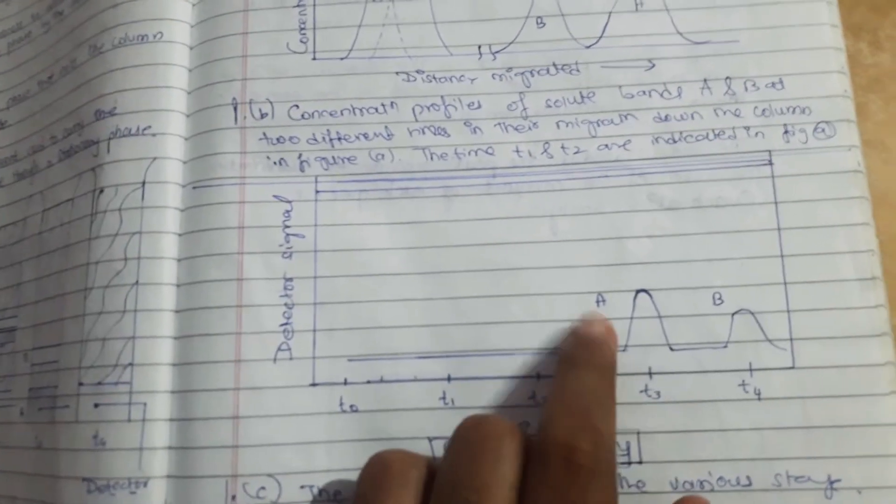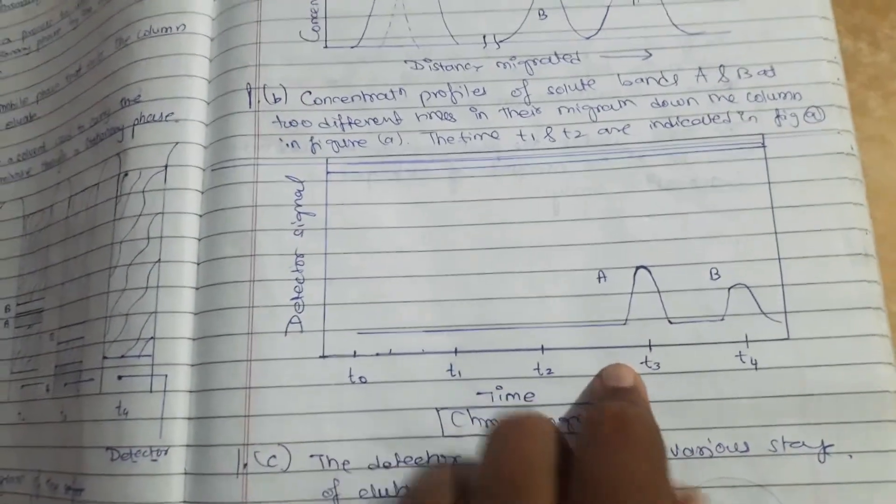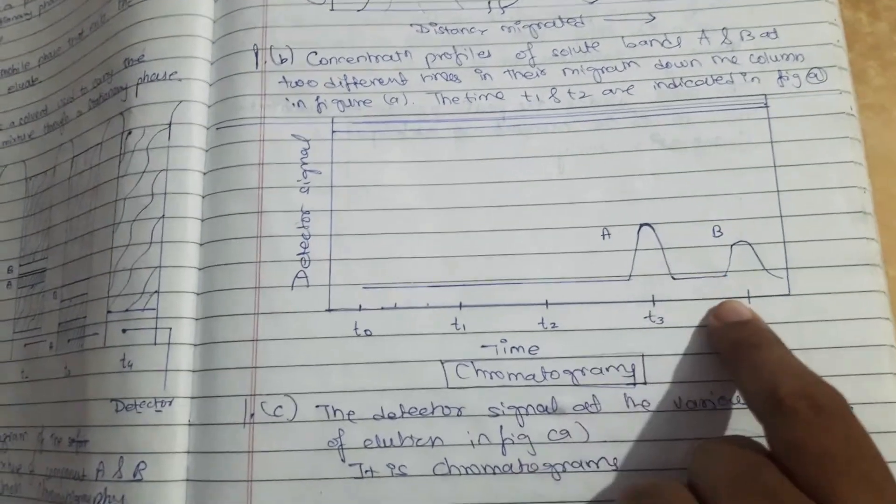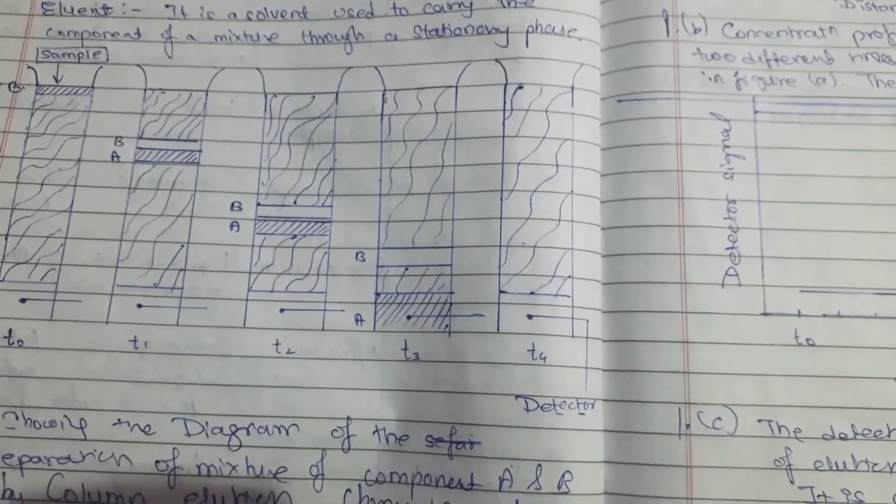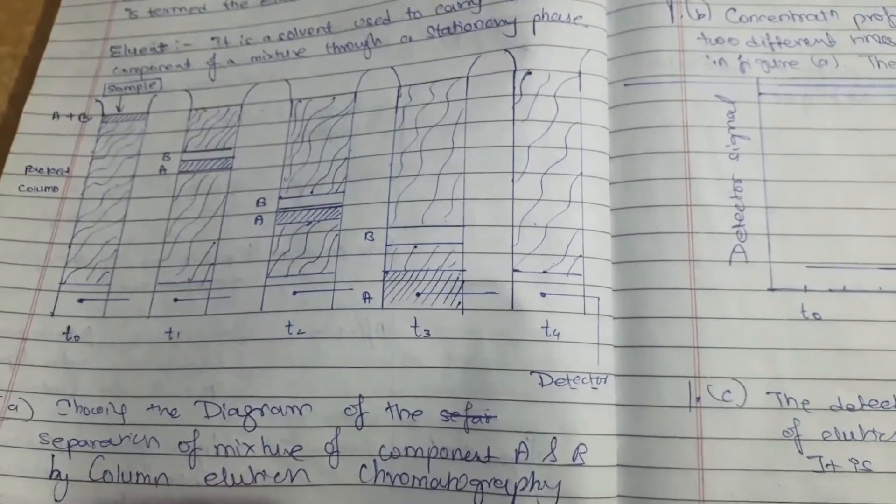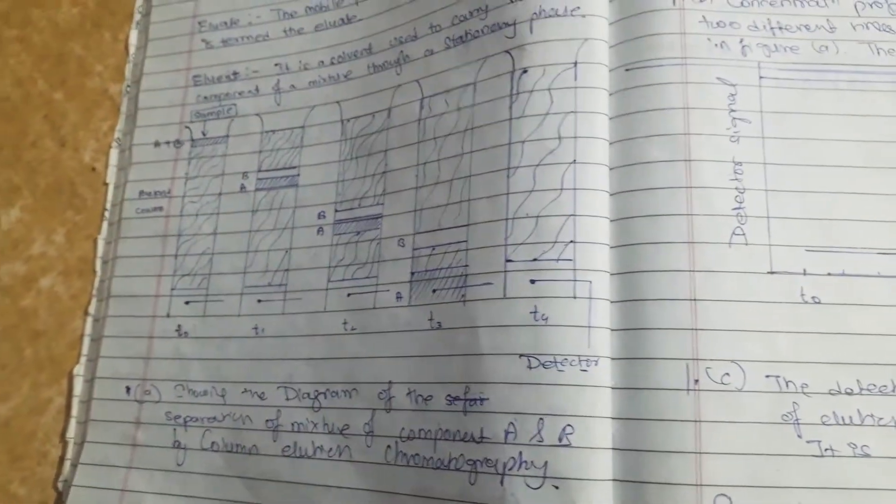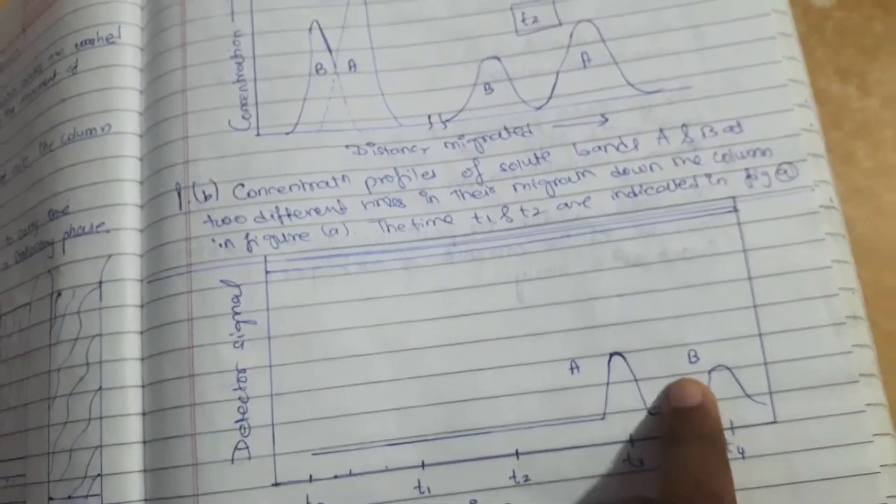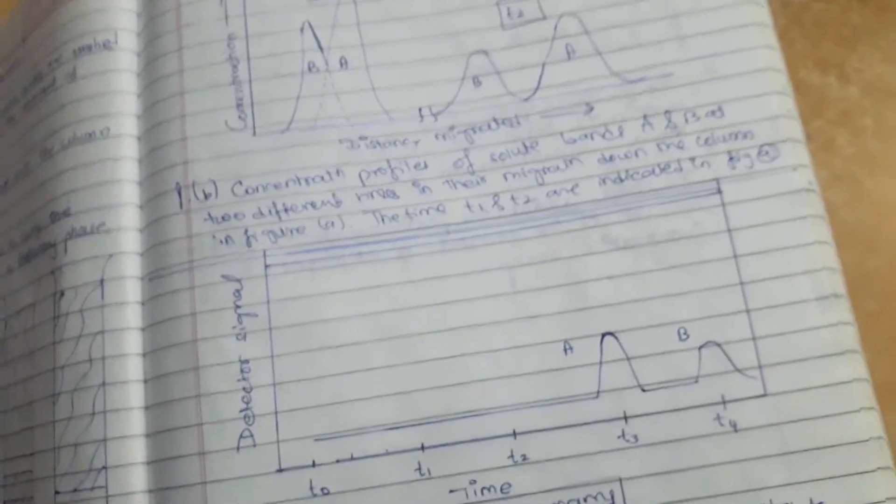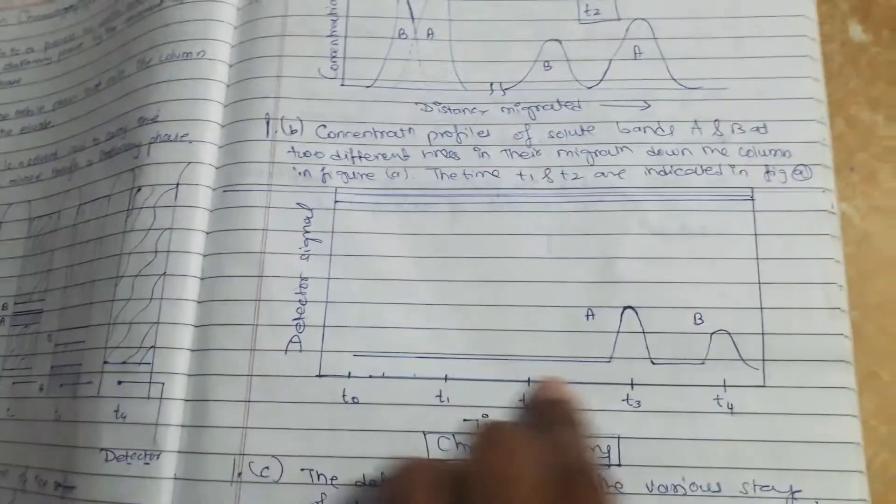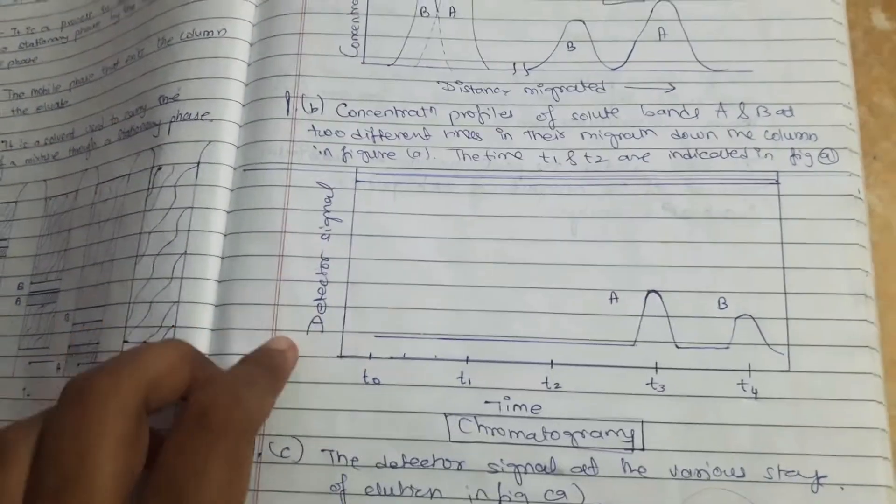So here at stage t3, component A is coming out of the column and this detection is showing those signals. Then at t4, component B comes out of the column at a later stage. So here at t4, component B is shown which comes out of the column at this stage. Now what is this diagram about? This diagram is called a chromatogram.